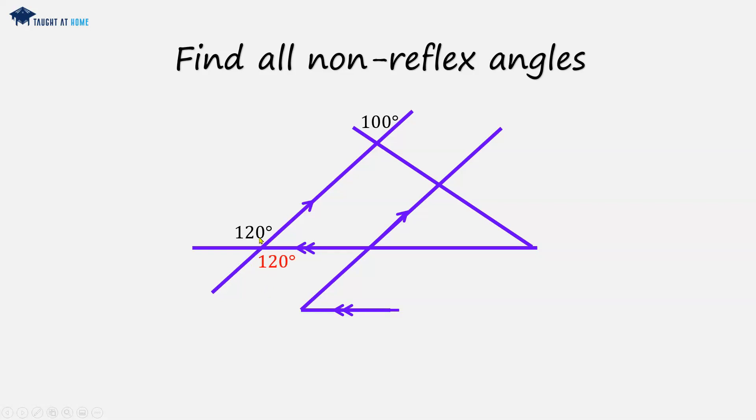This is on a straight line with this 120 degree angle, so it must add up to 180. So this must be 60 degrees. That's vertically opposite this, so that also must be 60.